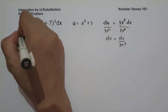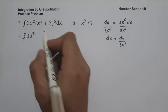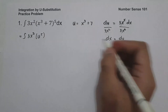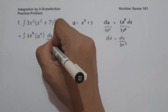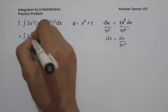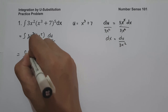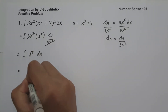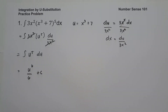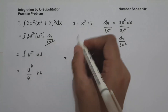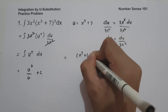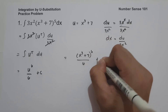Let us write the anti-derivative: 3x squared times (x cubed plus 7) becomes u raised to 5, and dx becomes du over 3x squared. The 3x squared terms cancel, leaving the anti-derivative of u raised to 5 du. The anti-derivative of u raised to 5 is u raised to 6 over 6 plus c. Substituting back, that is x cubed plus 7, so our answer is (x cubed plus 7) raised to 6 over 6 plus c.